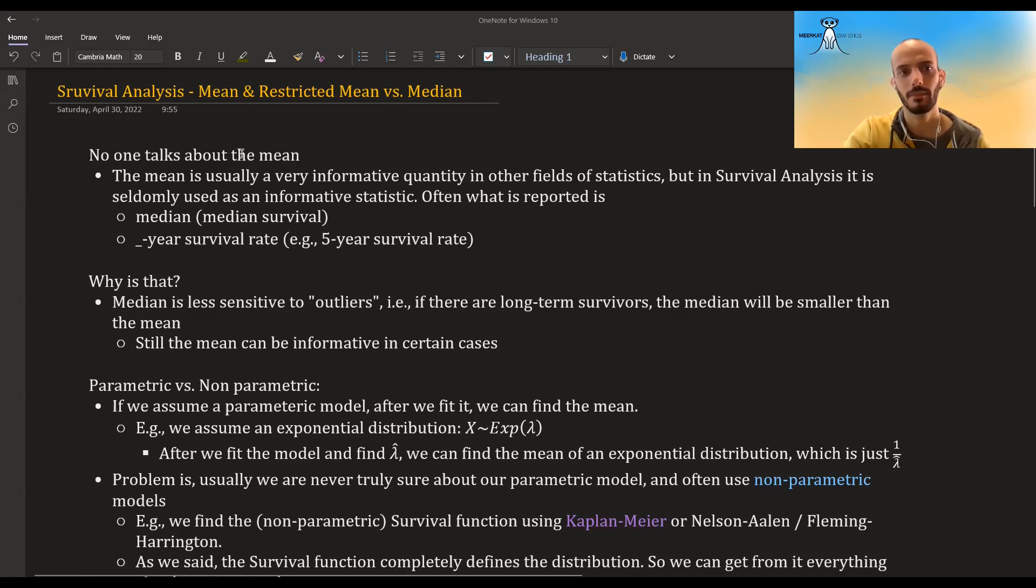With regards to the mean, it seems that no one talks about the mean in survival analysis. In other fields of statistics, usually what you are looking for is the mean - it's a very important quantity - but in survival analysis it's not often used. What is often reported is either the median or even more often some x-year survival rates, for example a five-year survival rate. And why is that?